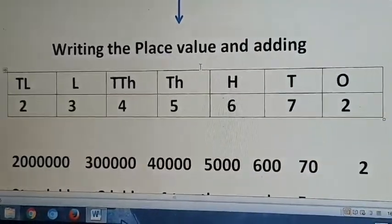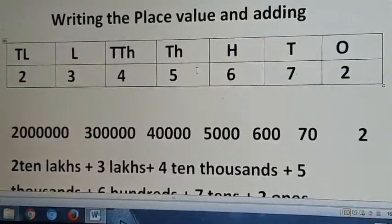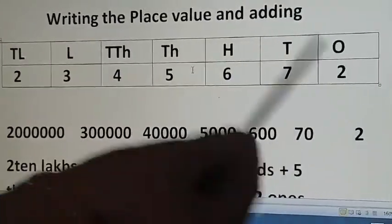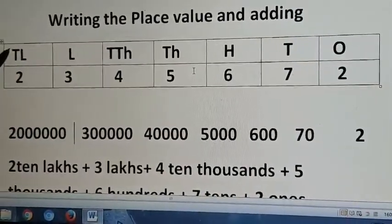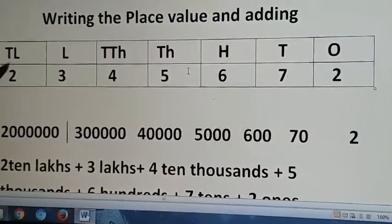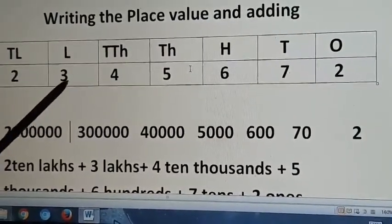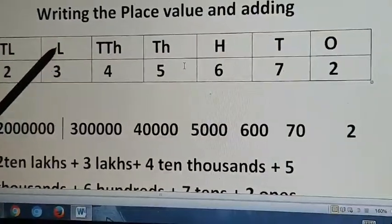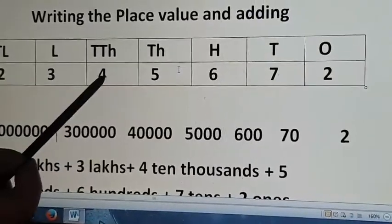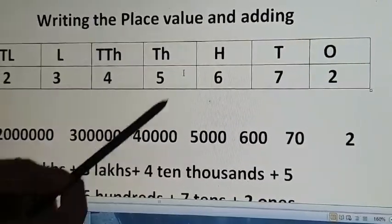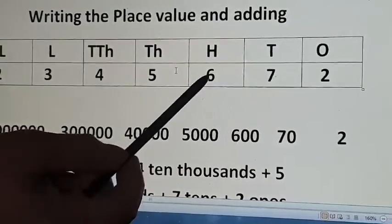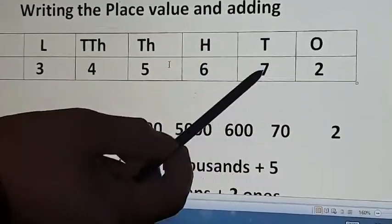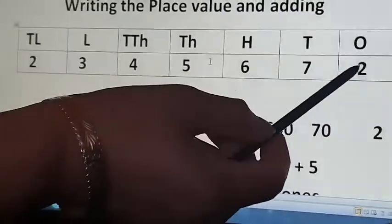Look at this number here. What you have to do is write the place value first. It is in the 10 lakhs place. So it is 2 ten-lakhs, that means 20 lakhs. Now 3 lakhs. 4 ten-thousands, that means 40,000. 5,000. 600. 70. 2 ones, that is 2.